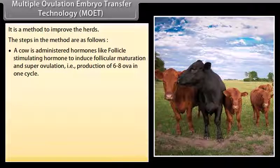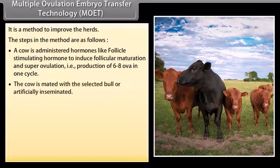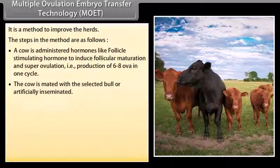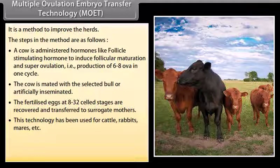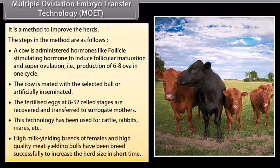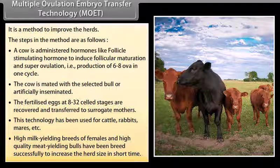Multiple ovulation embryo transfer (MOET) technology is a method to improve herds. A cow is administered hormones like follicle-stimulating hormone to induce follicular maturation and super ovulation, producing 6 to 8 ova in one cycle. The cow is mated with a selected bull or artificially inseminated. Fertilized eggs at 8 to 32-celled stages are recovered and transferred to surrogate mothers. This technology has been used for cattle, rabbits, and mares to breed high milk-yielding females and high-quality meat-yielding bulls to increase herd size in the short term.